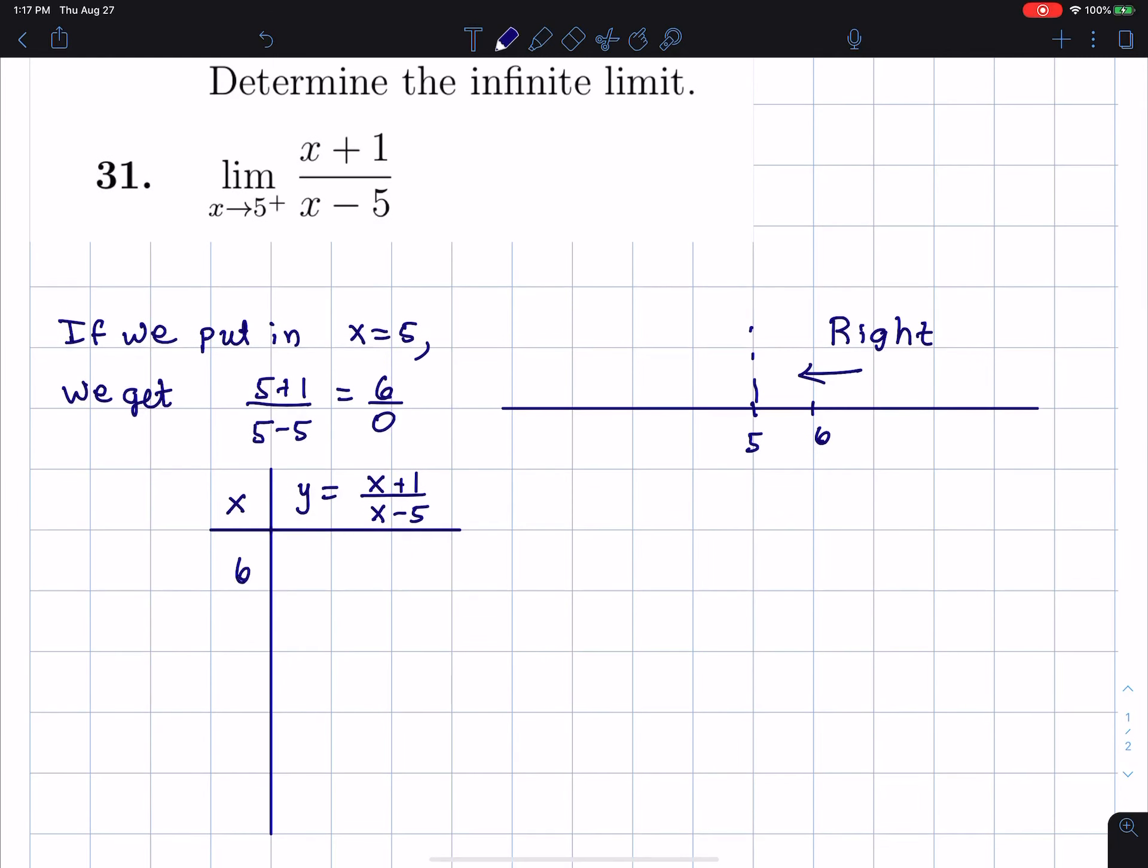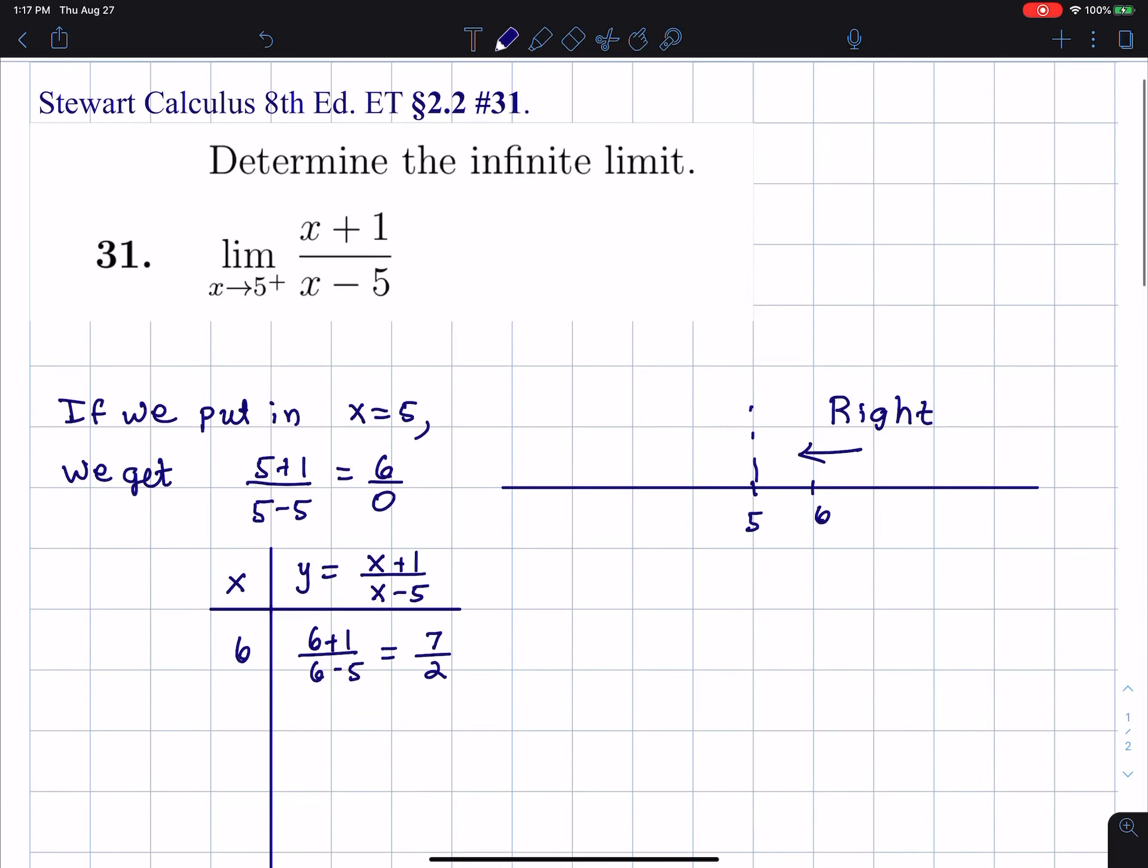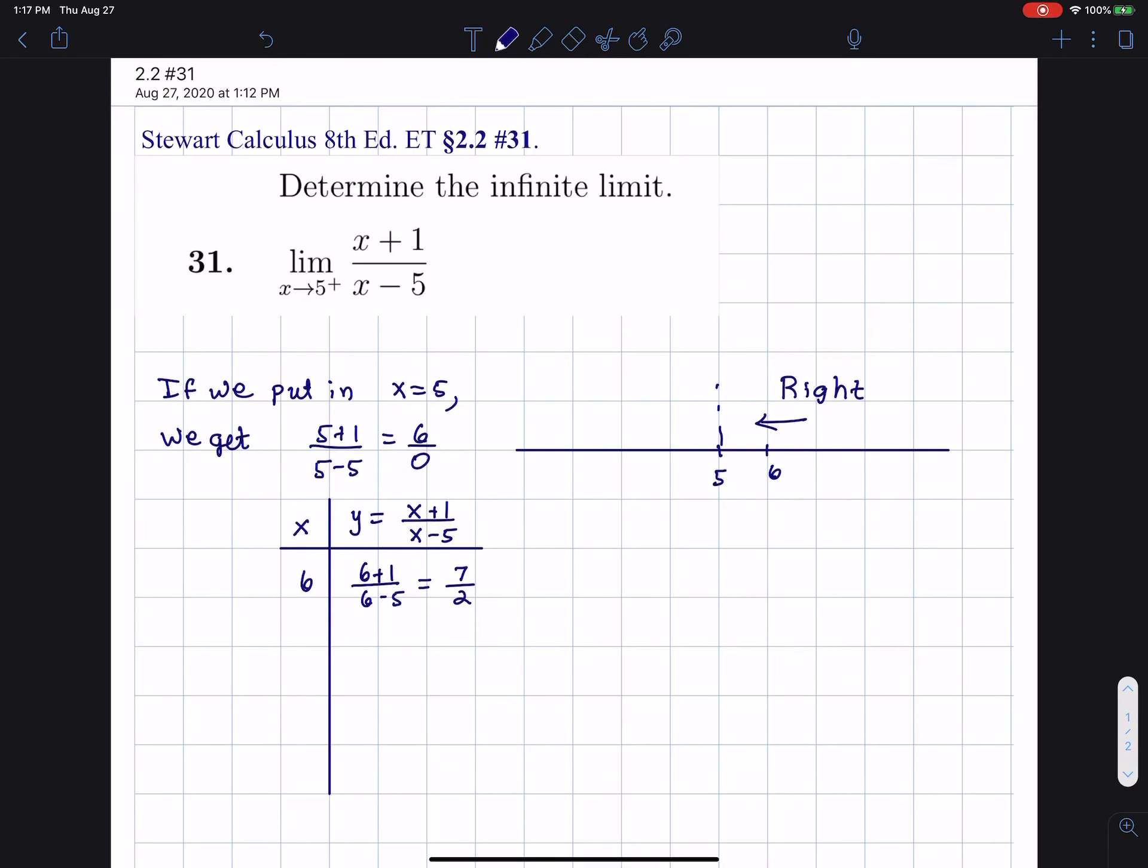So 6 is to the right of 5, and I get 6 plus 1 over 6 minus 5, and that gives 7 over 2. Well, it's a positive number. So if I already know that I'm going to have an infinite limit, which the form 6 over 0 indicates, that might be enough, because it's positive. Therefore, I see I'm going to get positive infinity, or I think I am.